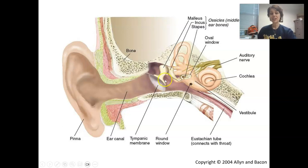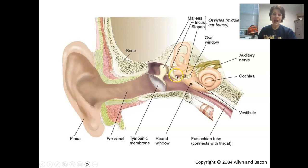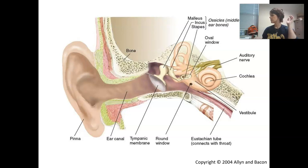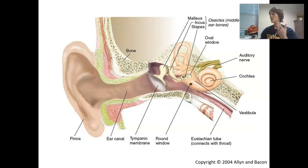First we have the malleus, also called the hammer, which is directly attached to the eardrum. Then we have our incus, or the anvil, located between the malleus and our final bone, the stapes — or the stirrup. The stirrup is attached to the oval window of the cochlea. The cochlea is the component of our inner ear — it is snail-shaped, filled with fluid, and made of bone. It's the primary structure of our inner ear and contains the sensory receptor neurons — called hair cells — that turn sound waves into a signal the brain can understand.